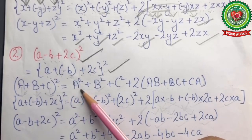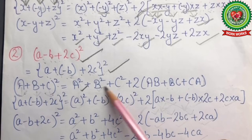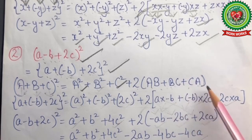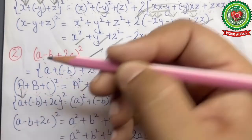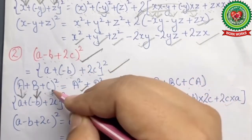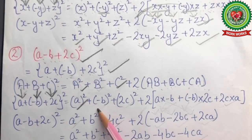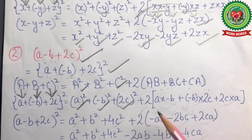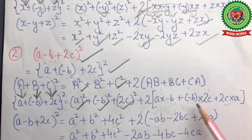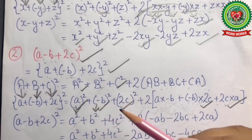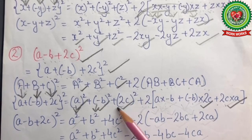Which is in the form of (a + b + c)² = a² + b² + c² + 2(ab + bc + ca). On substituting a as a, b as -b, and c as 2c, we get a² + (-b)² + (2c)² + 2[a(-b) + (-b)(2c) + (2c)(a)]. The square of a is a², the square of -b is b², and (2c)² is 4c².